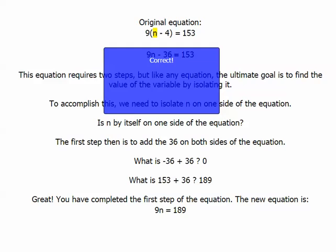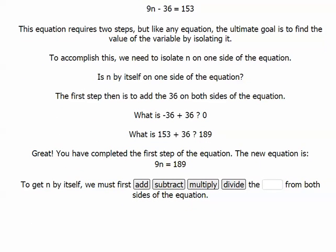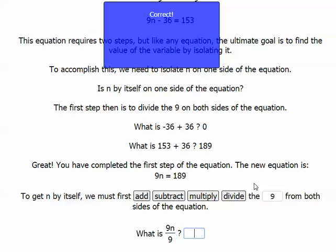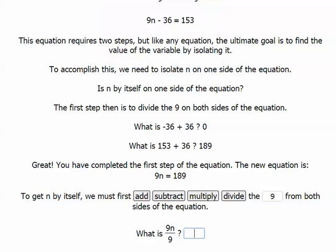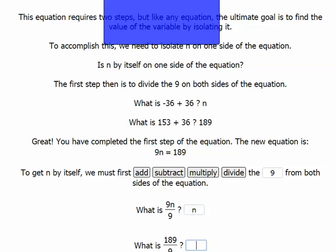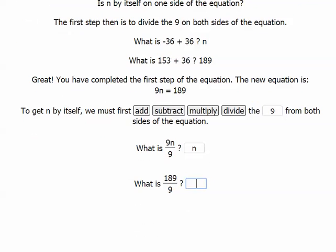So I've completed step 1. To get n by itself, we must then divide the 9 on both sides of the equation. 9n over 9, you see here, equals n. And 189 over 9 is 21. Click enter. So n equals 21.